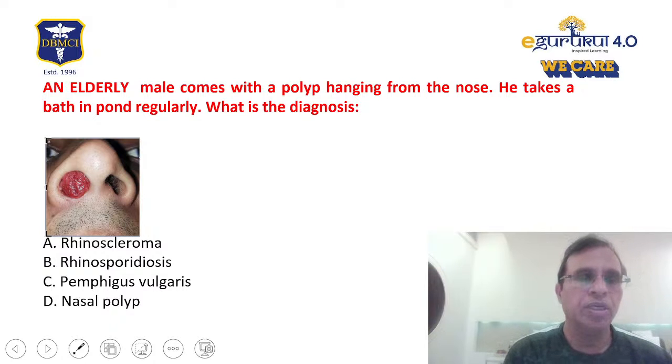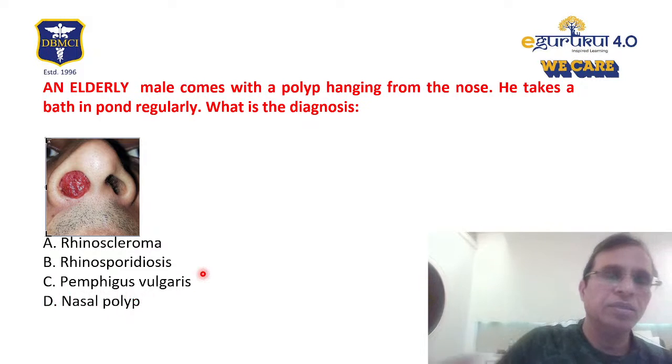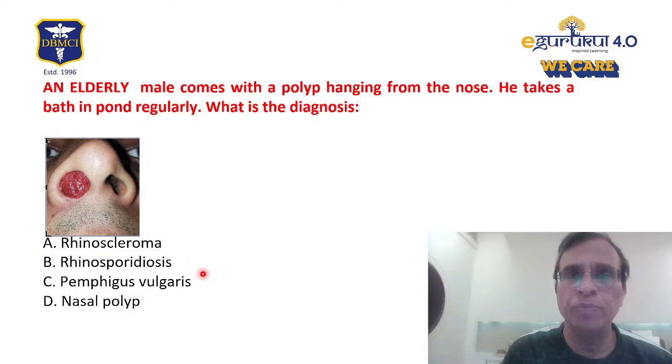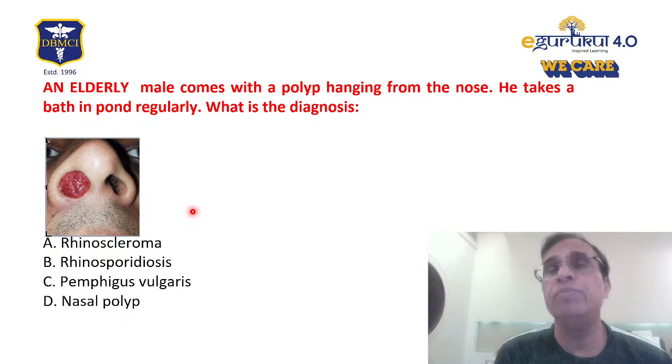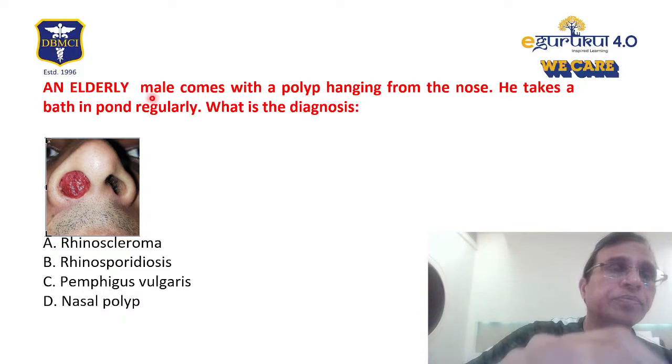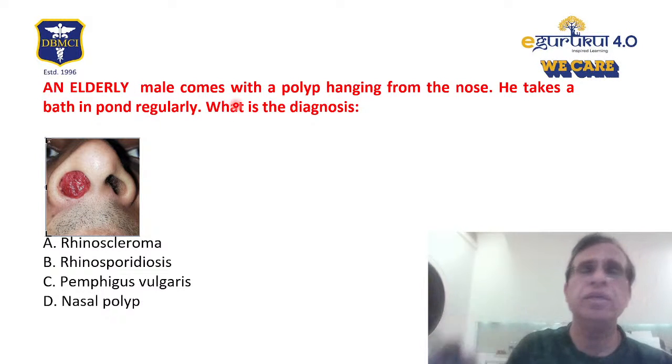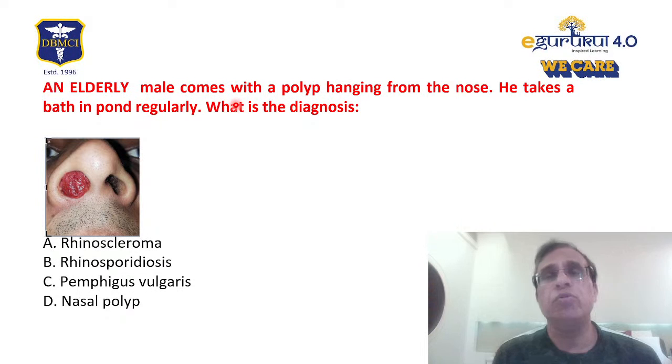Polyps are pale in color, not deep red like this. Nasal polyps have very poor blood supply. Rhinoscleroma is sclerosed tissue, not deep red in color, same color as normal nasal mucosa. There's no bleeding, it's fibrous tissue. Rhinoscleroma is a bacterial disease, has nothing to do with ponds. This is a hint: somebody is taking bath in the pond regularly, so it's an infective disease caused by a pathogen that grows in water.